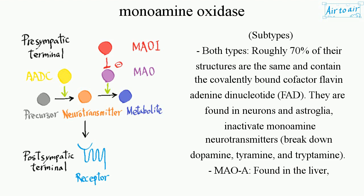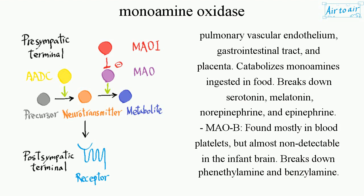MAO-A is found in the liver, pulmonary vascular endothelium, gastrointestinal tract, and placenta. It catabolizes monoamines ingested in food and breaks down serotonin, melatonin, norepinephrine, and epinephrine.